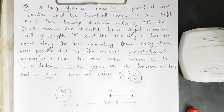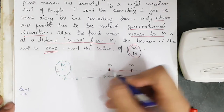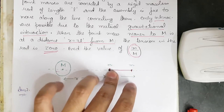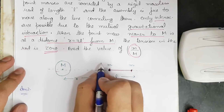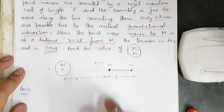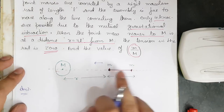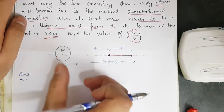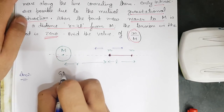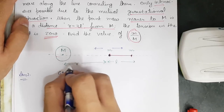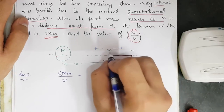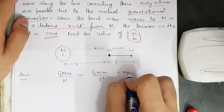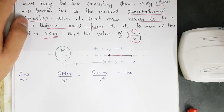For the nearer small mass m, two forces act: gravitational attraction toward M (force = G·M·m / r²) pulling it toward M, and gravitational attraction toward the other small mass m (force = G·m² / l²) pulling it away from M. Applying F = ma: G·M·m/r² − G·m²/l² = m·a.